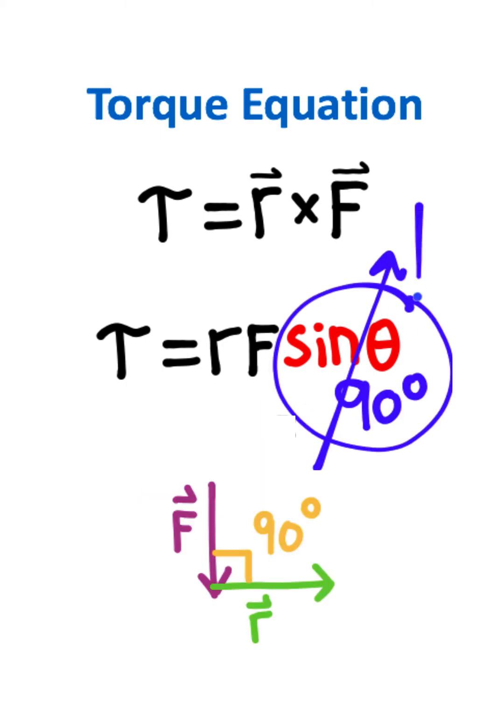The sine of 90 degrees is 1. So whenever the force and displacement are perpendicular, all you need to do is multiply the two magnitudes.